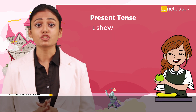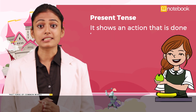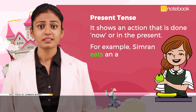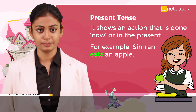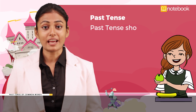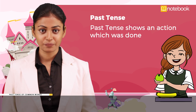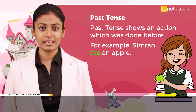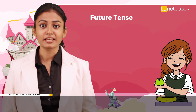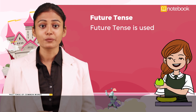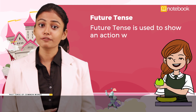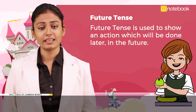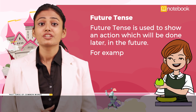Present tense shows an action that is done now or in the present. For example: Simran eats an apple. Past tense shows an action which was done before. For example: Simran ate an apple. Future tense is used to show an action which will be done later. For example: Simran will eat an apple.